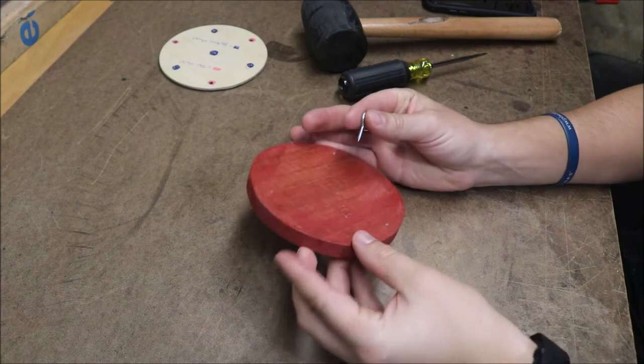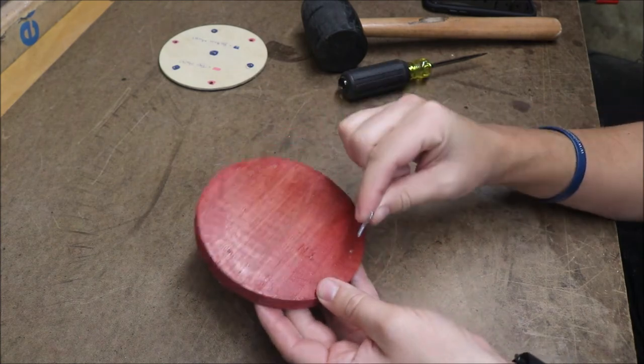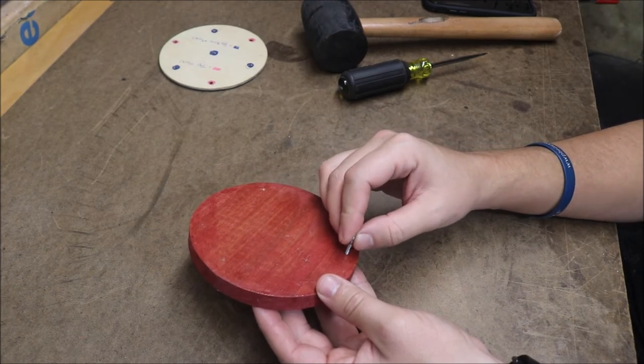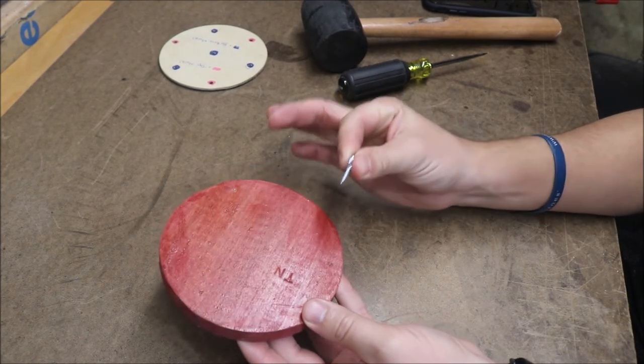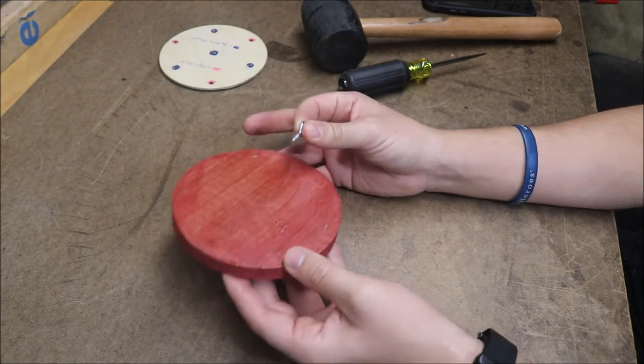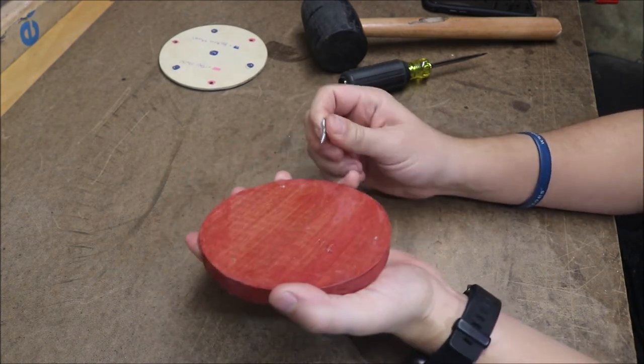The next step for us is we're going to be taking the screw eyes or the eyelets and putting them in those little holes that we used the scratch awl to make. This is probably one of the most difficult parts. You just need some patience and just to take your time.